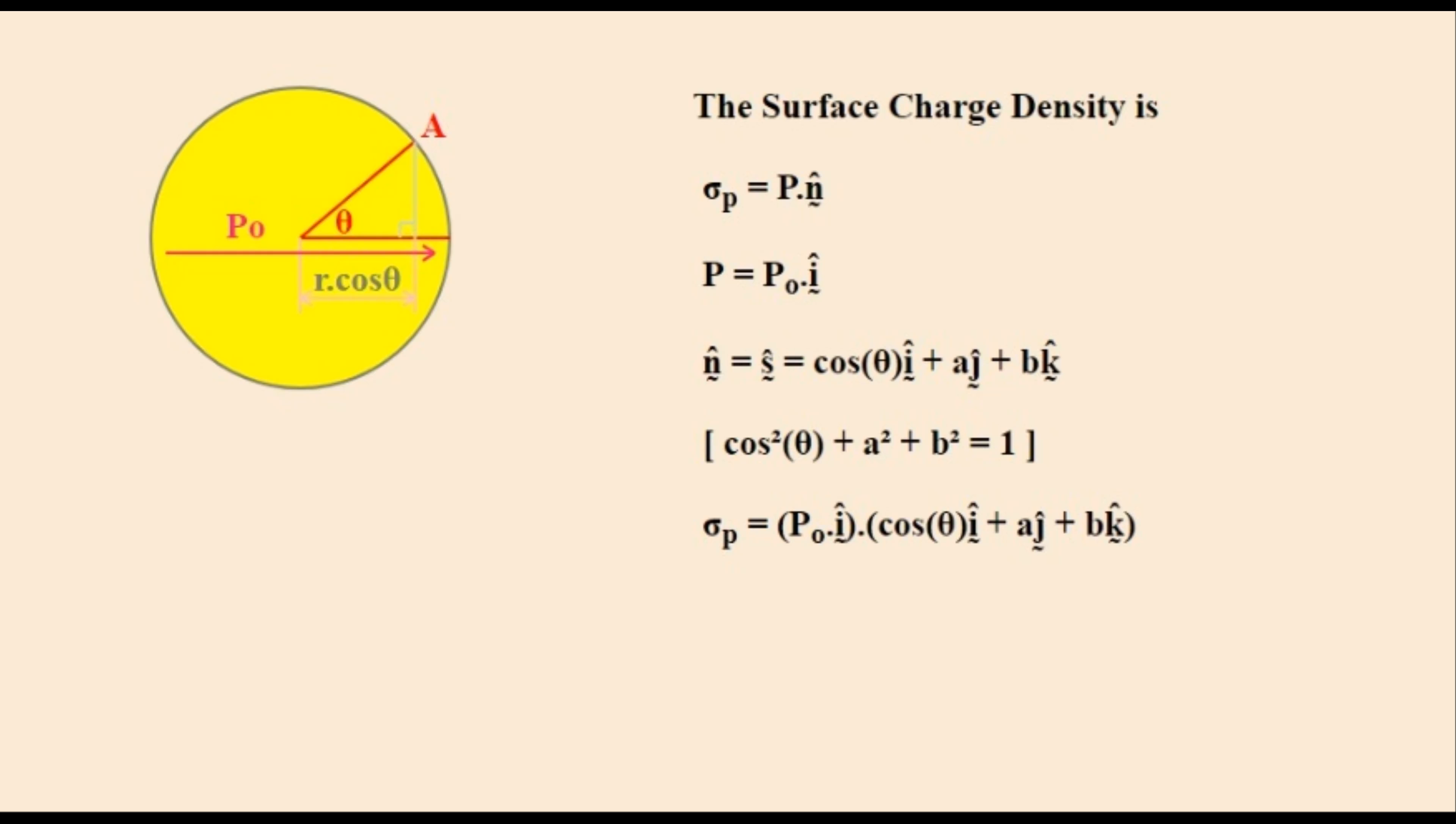So plugging these two values in for P and N gives us this dot product equation. So that A and B get discarded. And the surface charge density is equal to the equation shown in the box.